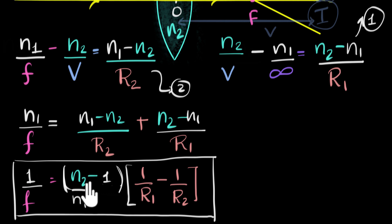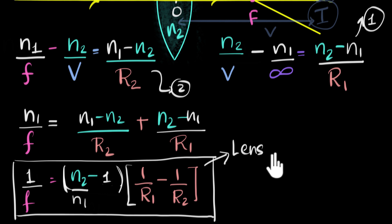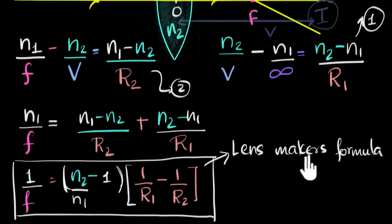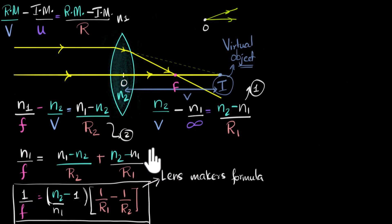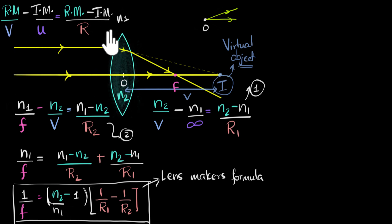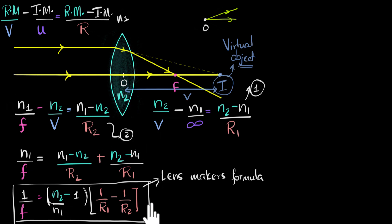This equation tells us what the focal length is — it depends on the refractive indices and the radii of curvature. We call this the lens maker's equation or lens maker's formula. It's called that because if you want to make a lens of a suitable focal length, you can use this equation to choose appropriate values of N2, N1, R1, and R2. To summarize the key steps: apply the curved surface refraction formula to each surface, use the image of the first surface as the object for the second, combine the equations to get the final result.